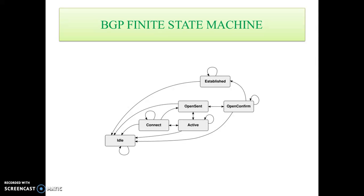This is the BGP finite state machine. We can see the finite state machine of Border Gateway Protocol, which has six nodes: Idle, Connect, Open Send, Active, Open Confirm, and Established.